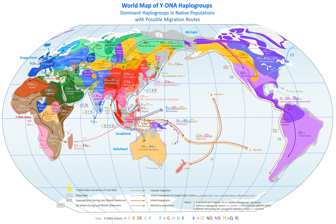Such as A → A1 → A1a. In human genetics, the haplogroups most commonly studied are Y-chromosome haplogroups and mitochondrial DNA haplogroups, each of which can be used to define genetic populations. Y-DNA is passed solely along the patrilineal line from father to son, while mtDNA is passed down the matrilineal line from mother to offspring of both sexes. Neither recombines, and thus Y-DNA and mtDNA change only by chance mutation at each generation, with no intermixture between parents' genetic material.